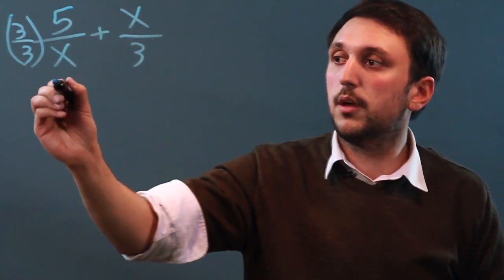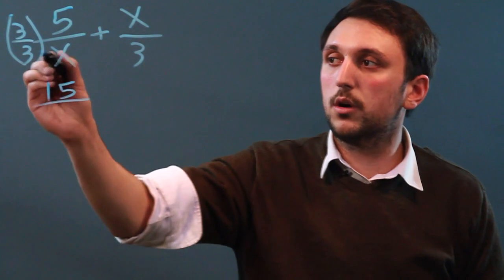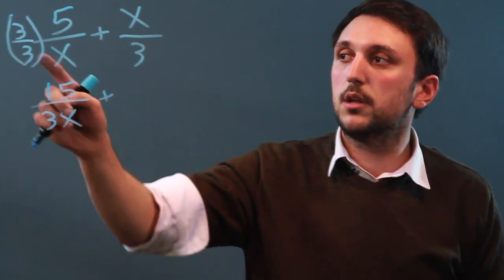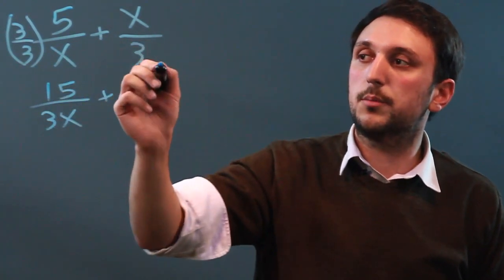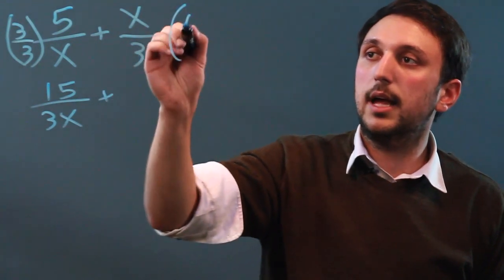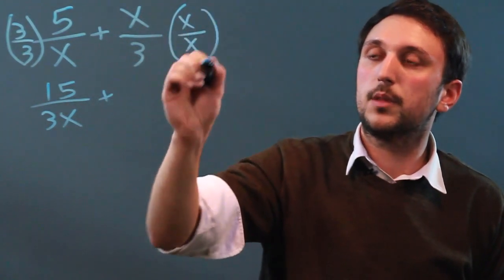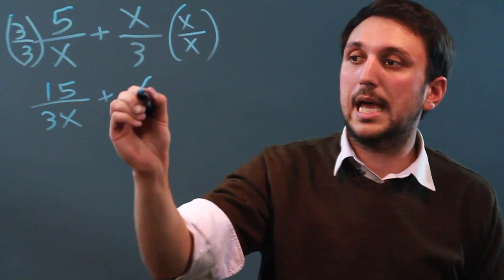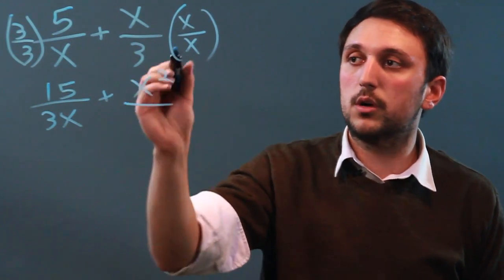So we end up with 15 over 3x, plus over here we're going to multiply by x over x, which gives us x squared over 3x.